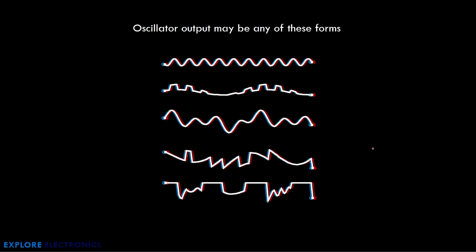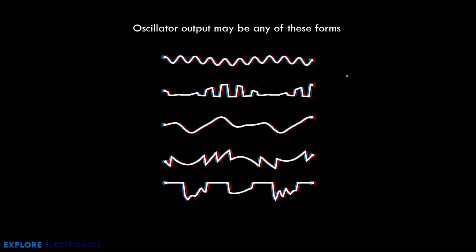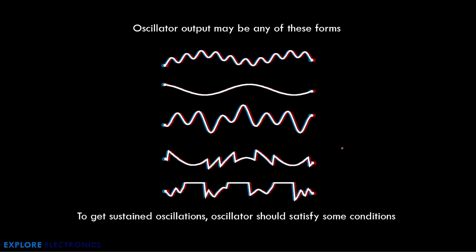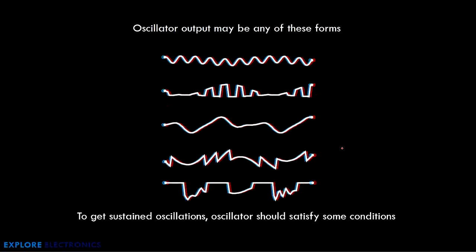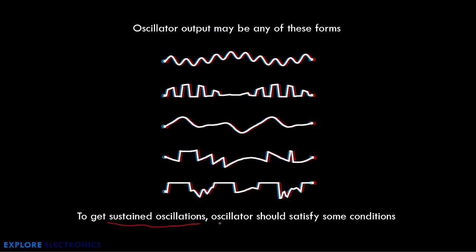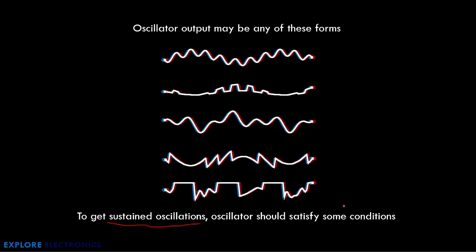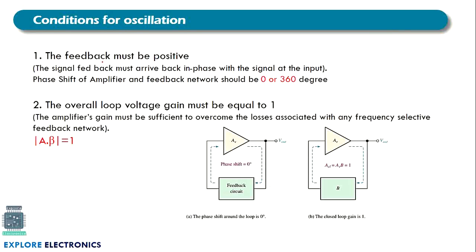The oscillator output may be a sine wave or a continuous signal. To get a continuous signal with sustained oscillation — meaning without disturbance — the oscillator must satisfy certain conditions. The first condition is that the feedback must be positive: we must have positive feedback with an amplifier. The feedback signal must arrive back in phase with the input signal, meaning the overall phase shift of the amplifier and feedback network should be 0° or 360°.